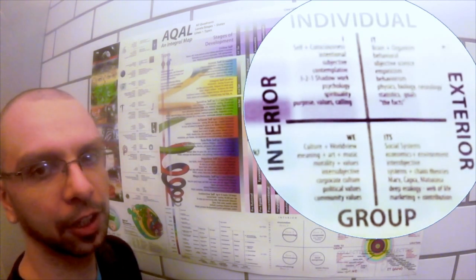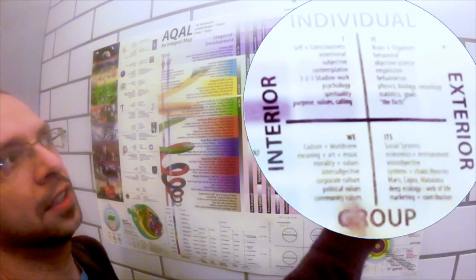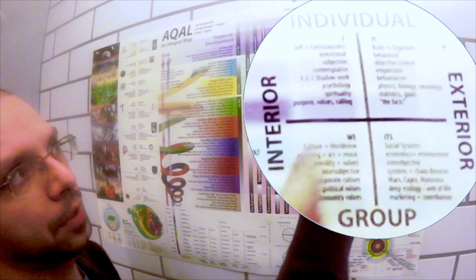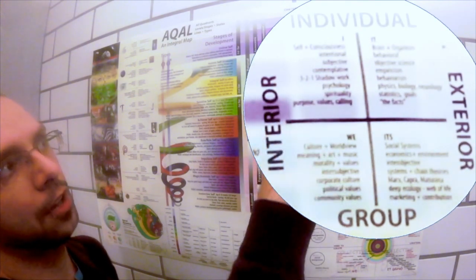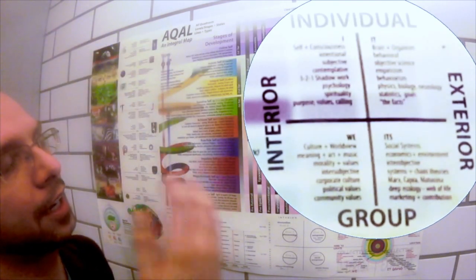But then there's interior aspects too. Like there's I. So you have self and consciousness and subjectivity, intentions, the contemplative realm, shadow, psychology, spirituality, purpose, values, callings, personal feelings, that kind of thing.